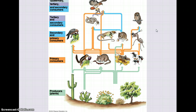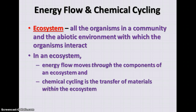When we eat a salad we're a primary consumer; when we eat a hamburger we're a secondary consumer; when we eat tuna fish we might be a tertiary or quaternary consumer depending on what the tuna has eaten. In the ecosystem — which includes all organisms in the community plus the abiotic or nonliving parts of the environment — energy flows through the components, through the organisms and populations. Chemical cycling is the transfer of materials within the ecosystem, so we're talking about both energy and matter flowing through the ecosystem.